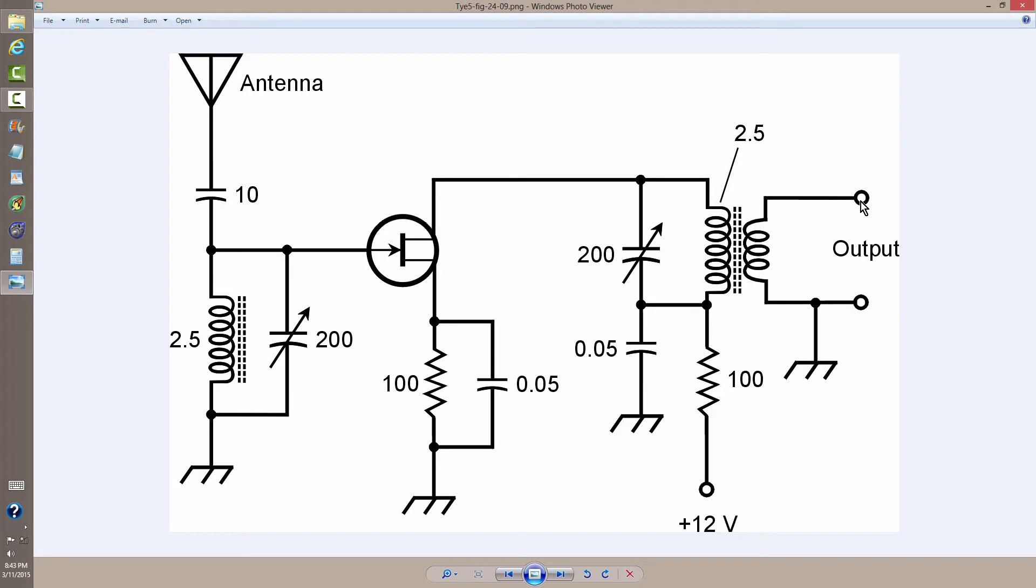Well, in this case, you would connect the probe right here to the output terminal that isn't grounded in the secondary of this transformer.